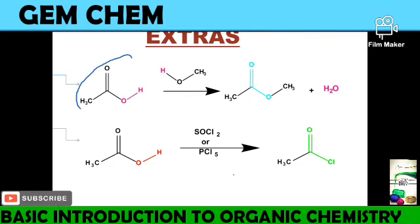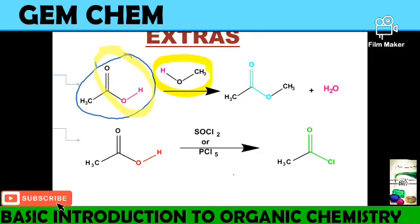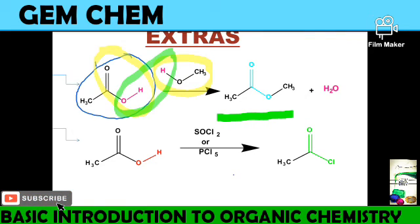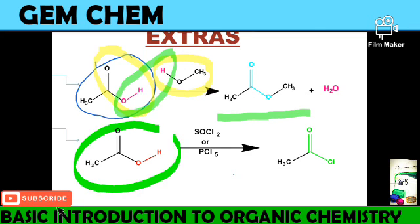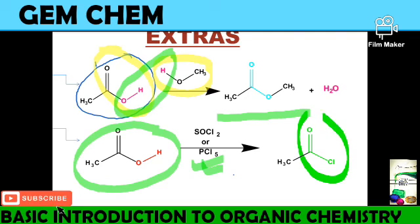We can also interconvert functional groups. For example, adding an alcohol to an acid group eliminates water and produces an ester group. Similarly, treating an acid group with an appropriate reagent replaces the –OH with a chlorine to give an acid chloride. This is how we can easily change one functional group to another.